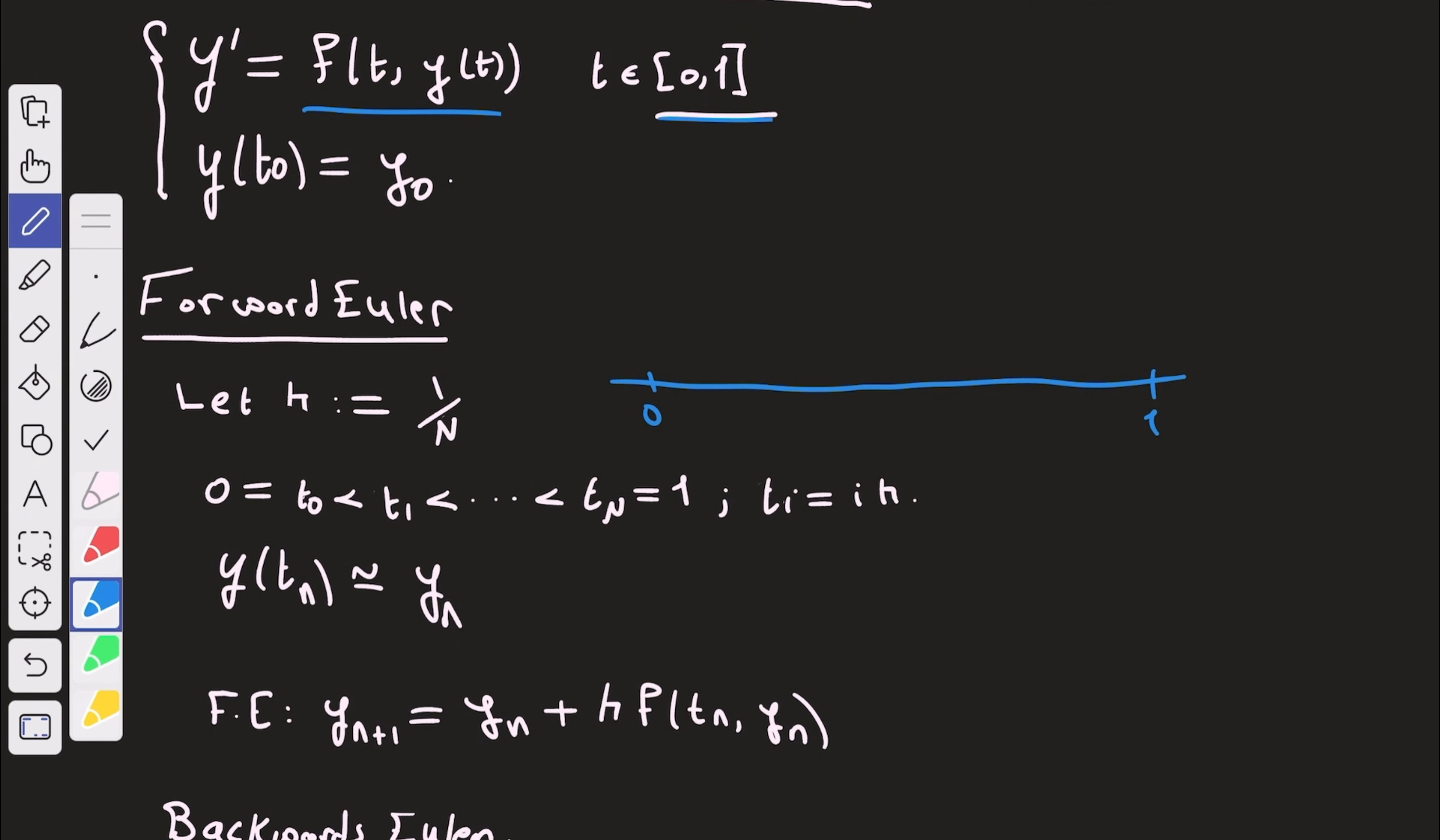So what we're going to do is that we're going to partition it into n plus 1 points, n plus 1 equidistant points, t0, then t1, then t2, and so on and so forth, until we reach tn minus 1 and tn. So we're taking the distance here to be h.